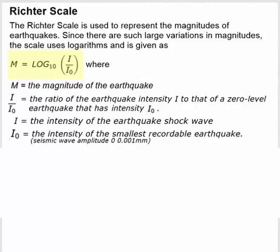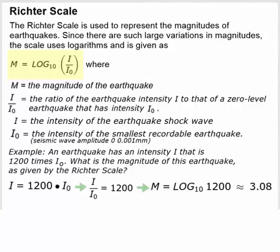So let's look at the following example. An earthquake has an intensity I that is 1200 times I sub not. What is the magnitude of this earthquake, as given by the Richter scale?